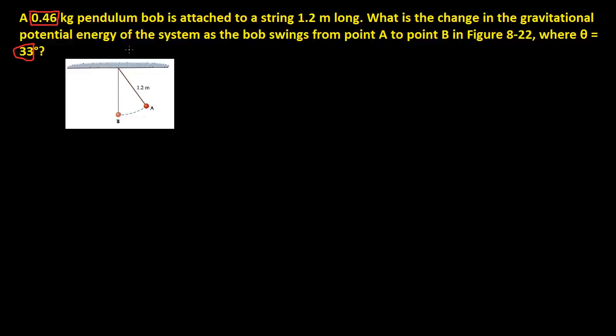Hello. So this problem is really simple actually, if you look at it in this way. The question says, a 0.46 kilogram pendulum bob is attached to a string 1.2 meters long. What is the change in the gravitational potential energy of the system as the bob swings from point A to point B in figure A22, where theta is 33 degrees?